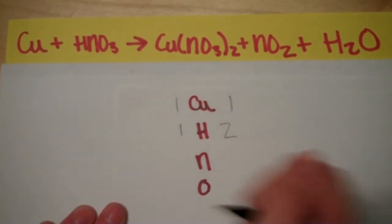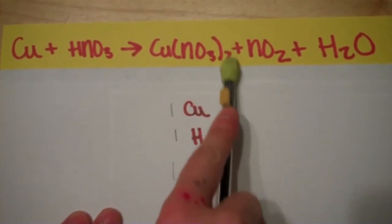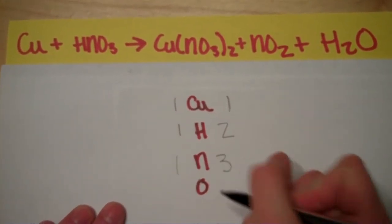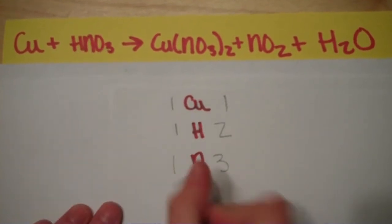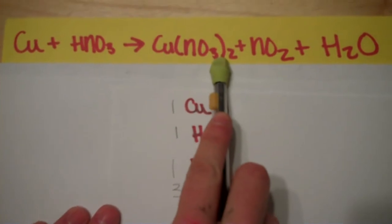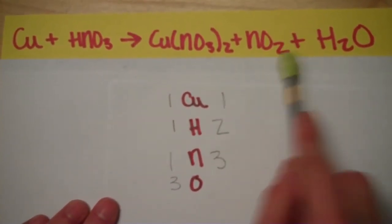For nitrogen, there's one on this side, and two there because that's in brackets with the two, three. So three, and then there's three oxygen, and one, two, three, and then there's two of those, six, seven, eight, nine.